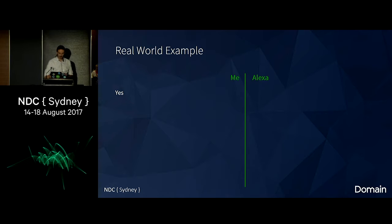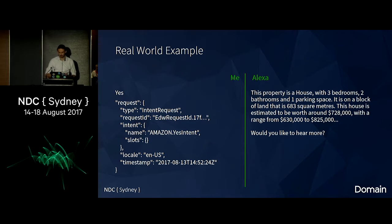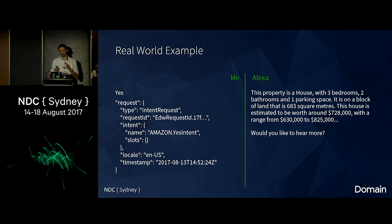I'm going to say yes, this is my house. This time it uses the built-in yes intent. 'This property is a house with three bedrooms, two bathrooms, and one parking space. It is on a block of land that is 683 square meters. This house is estimated to be worth around $728,000, with a range from $630,000 to $825,000. Would you like to hear more?' There is a lot of information here — you don't want people to sit through a two-hour audio book all at once, so keep things short enough. If you have more content, ask your users if they want to hear more.